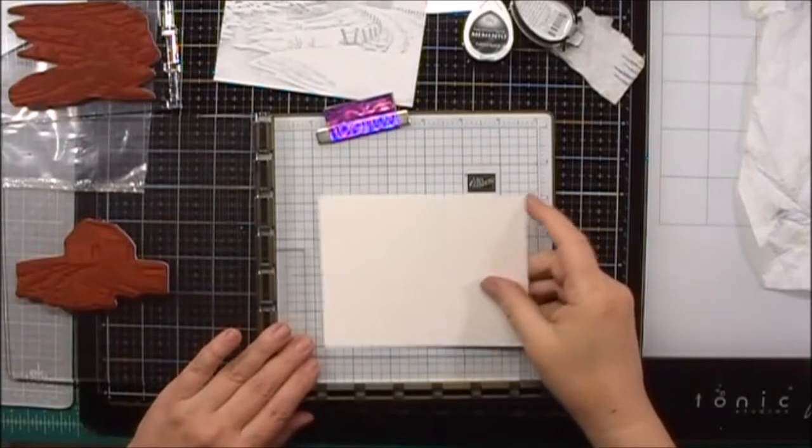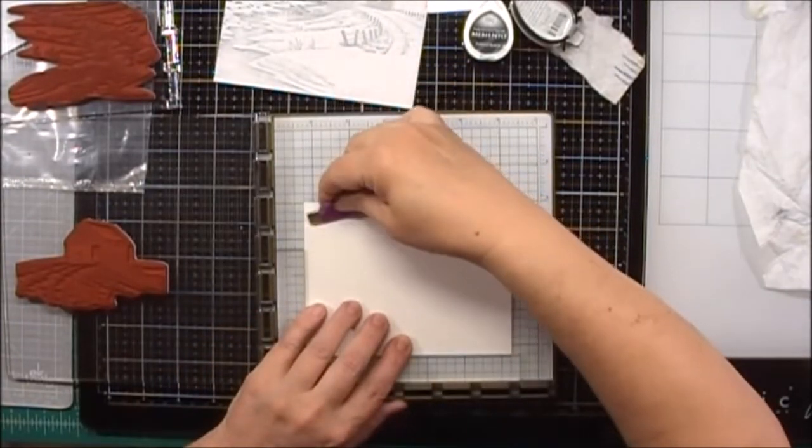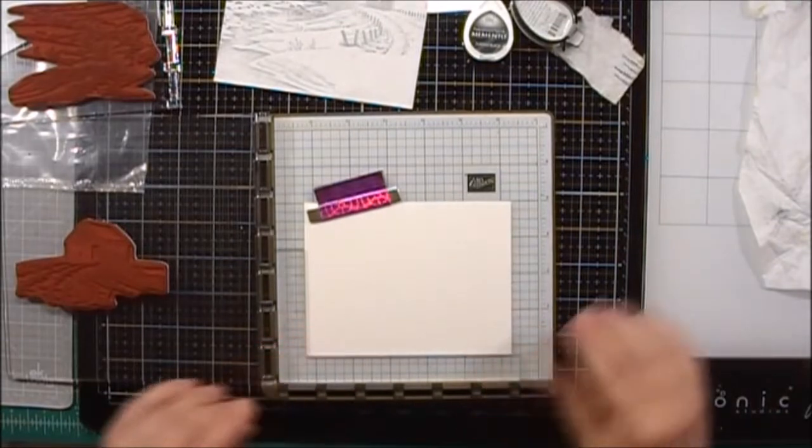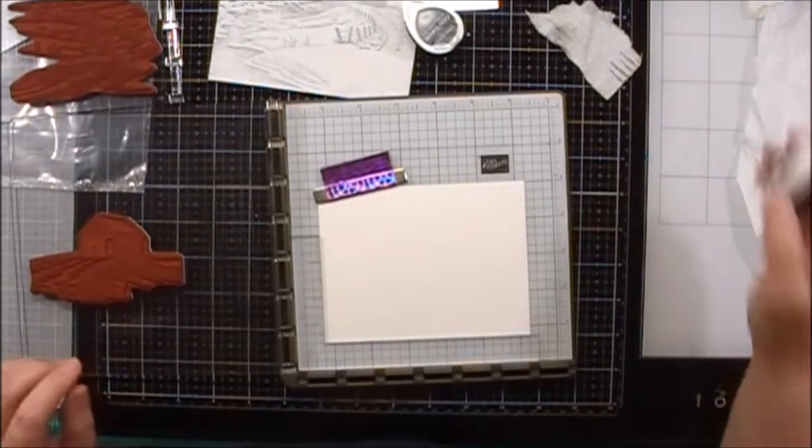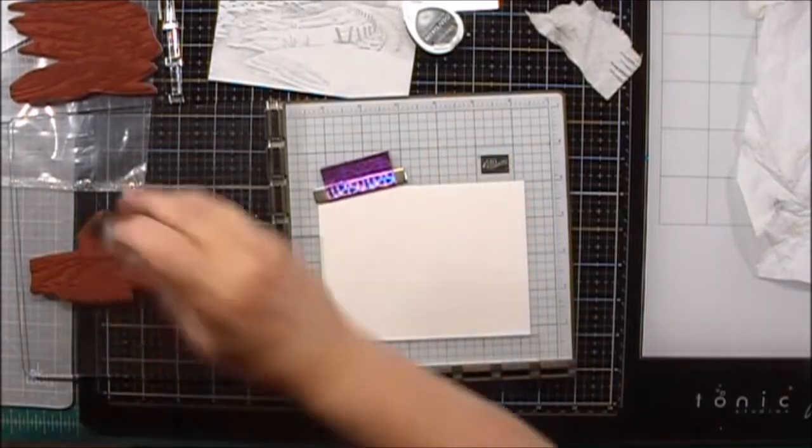I'm going to stamp on a quarter sheet of Neenah Classic Crest Solar White, 80 pound. I'll start by stamping the bridge and I'm going to use some Memento London Fog.